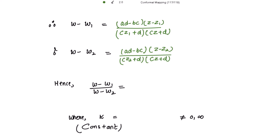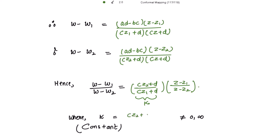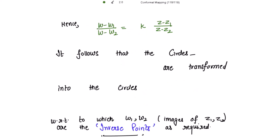Dividing these two, we get (w − w1)/(w − w2). The common factor (ad − bc)/(cz + d) cancels out, giving (cz2 + d)/(cz1 + d) · (z − z1)/(z − z2). Let's name (cz2 + d)/(cz1 + d) as the constant k, where k is not equal to 0 or infinity. Hence (w − w1)/(w − w2) = k · (z − z1)/(z − z2). Taking the modulus throughout gives |w − w1|/|w − w2| = |k| · |z − z1|/|z − z2|.